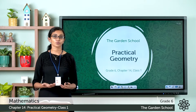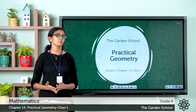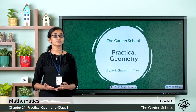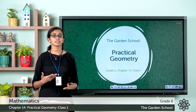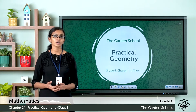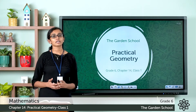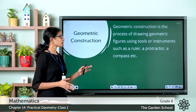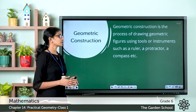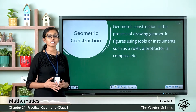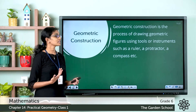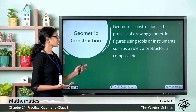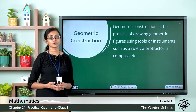angles and so on, using different geometrical tools such as a ruler, a compass, a divider, etc., you call that a geometric construction. Geometric construction is the process of drawing geometric figures using tools or instruments such as a ruler, a protractor, a compass, etc.